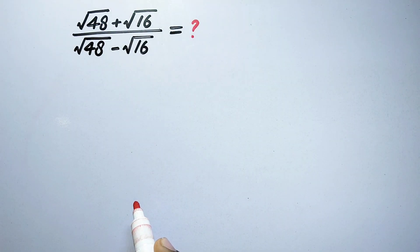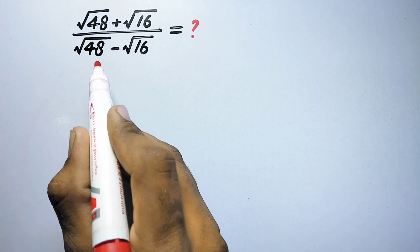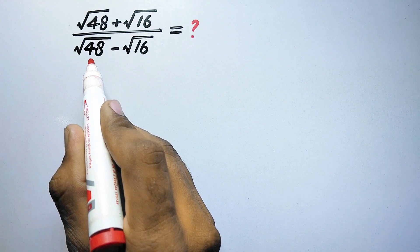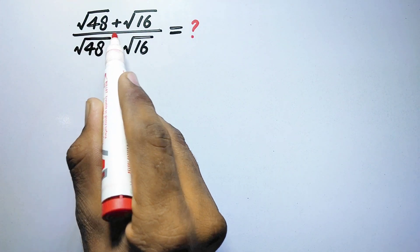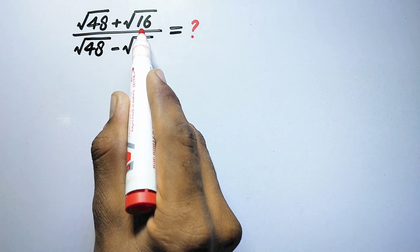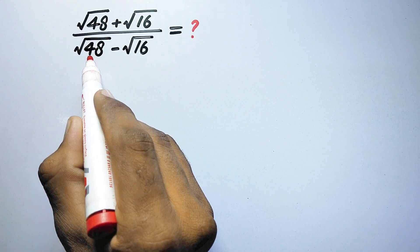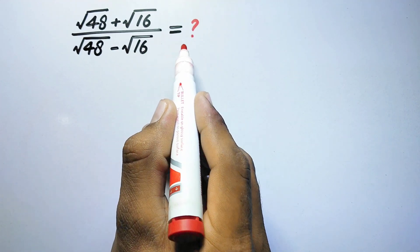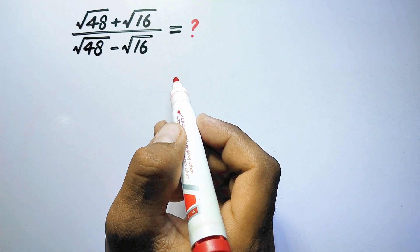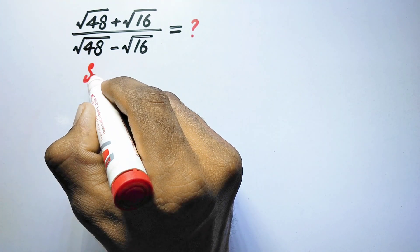Hello everyone and welcome to ExplodeMaths. In this video we have to simplify the problem: square root of 48 plus square root of 16, divided by square root of 48 minus square root of 16. Let us see its simplification.